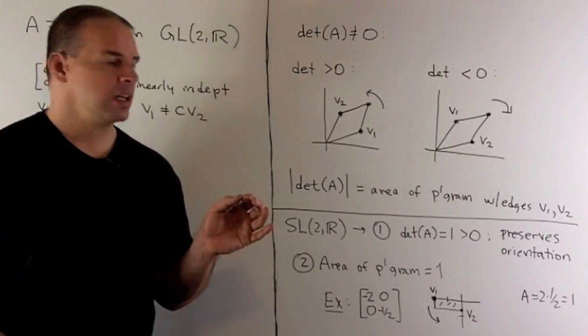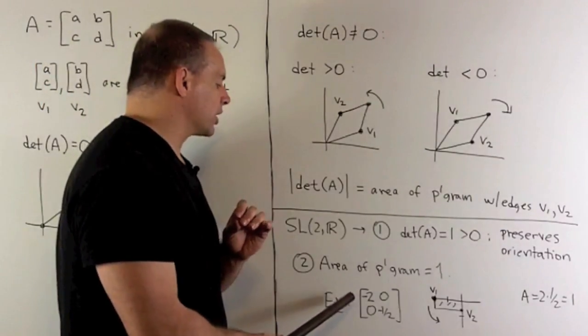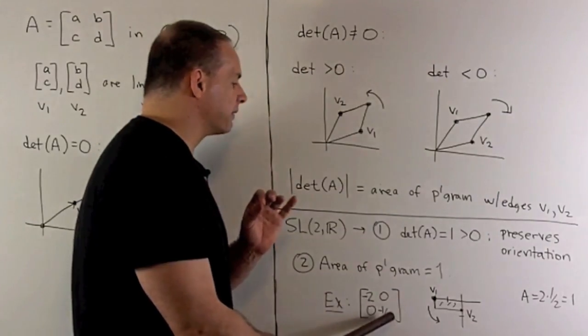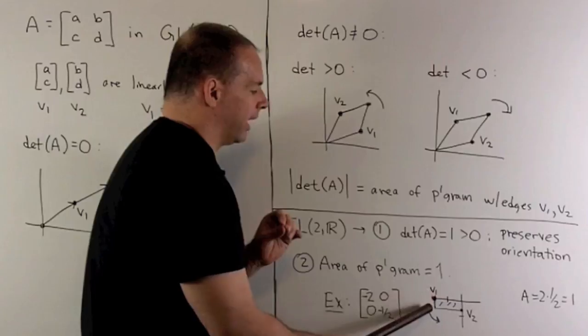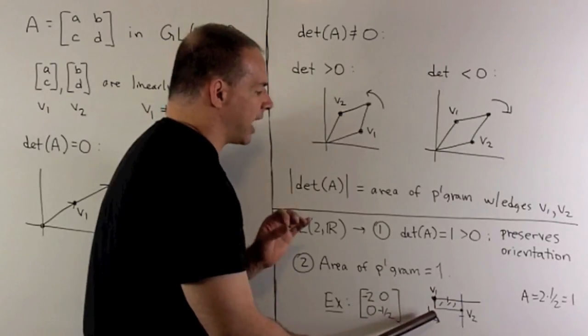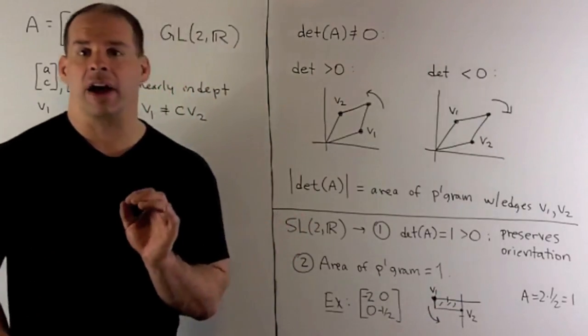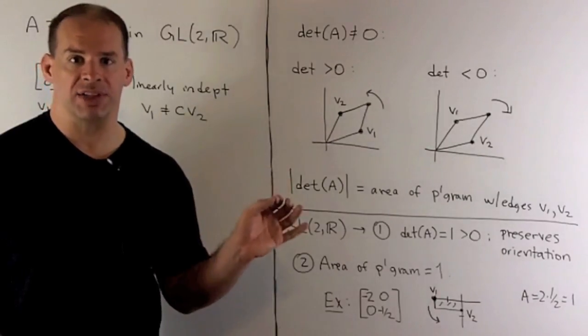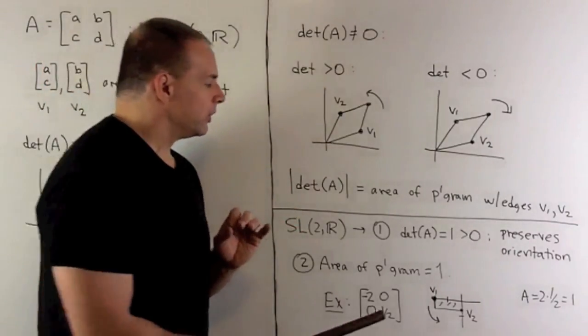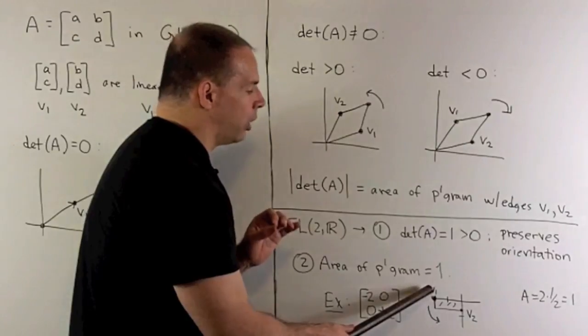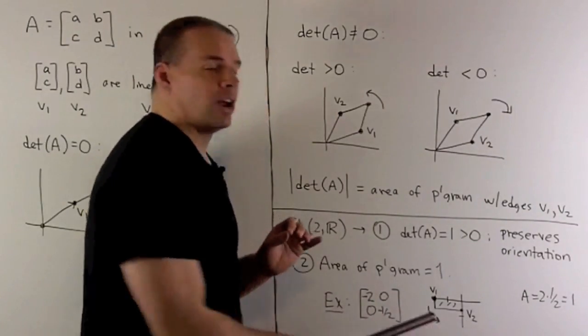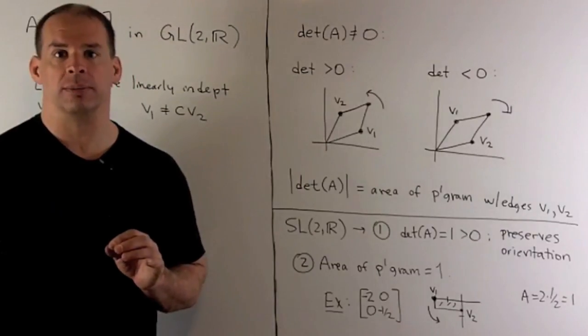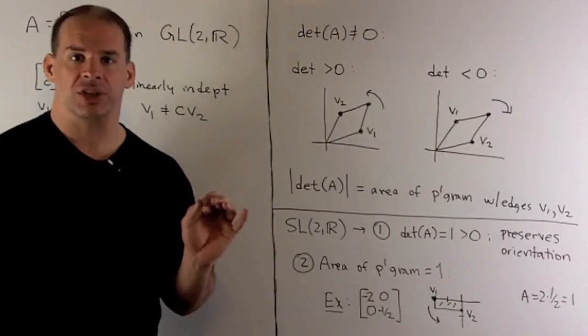Now, for an example of this, let's take a look at the diagonal matrix minus two minus a half. So, if we draw in V1 and V2, make a parallelogram, which is a rectangle. The area of that parallelogram is going to be equal to one, as promised. And then, you'll note, if we take V1 going to V2, that direction is going to be pointing in a counterclockwise direction. So, orientation is preserved.